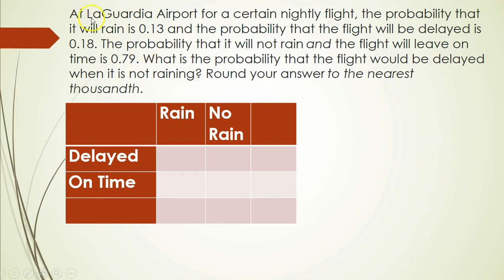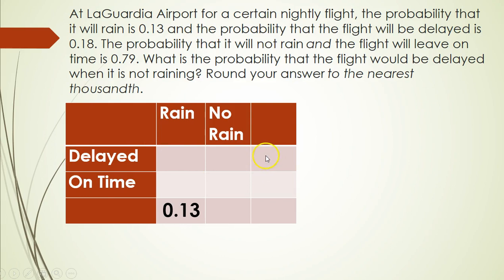Let's look at the information we have. It says the probability that it will rain is 0.13 — so that means 'will rain,' that's all of the rain column, and we put 0.13 as that total. Then it says the probability that the flight will be delayed is 0.18 — so delayed covers all delayed flights whether raining or not raining, so that total goes there.